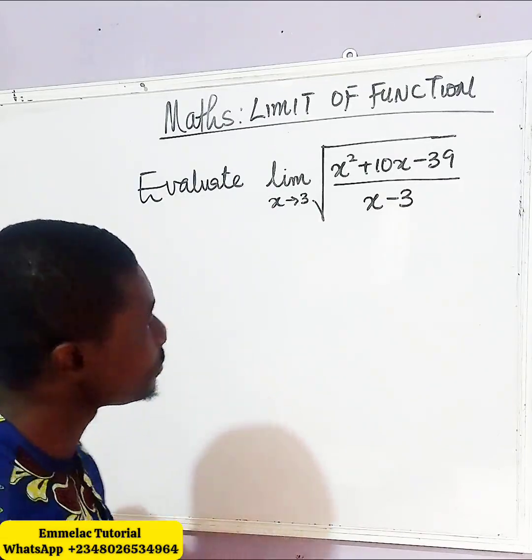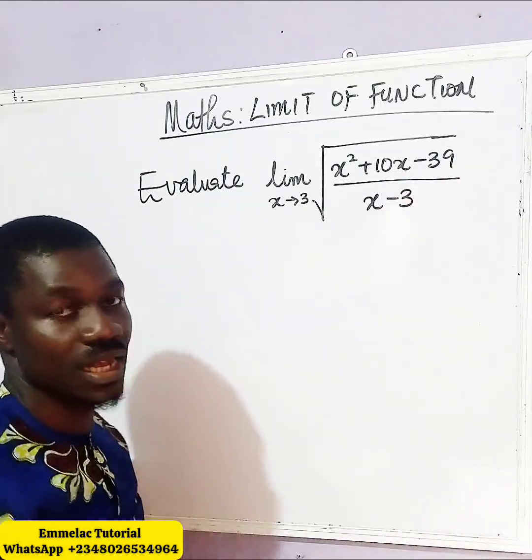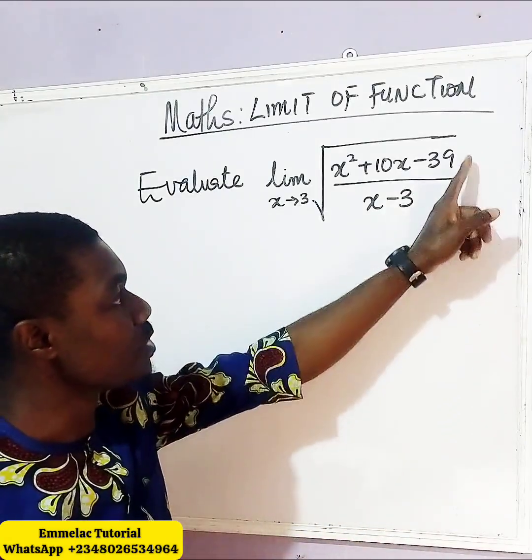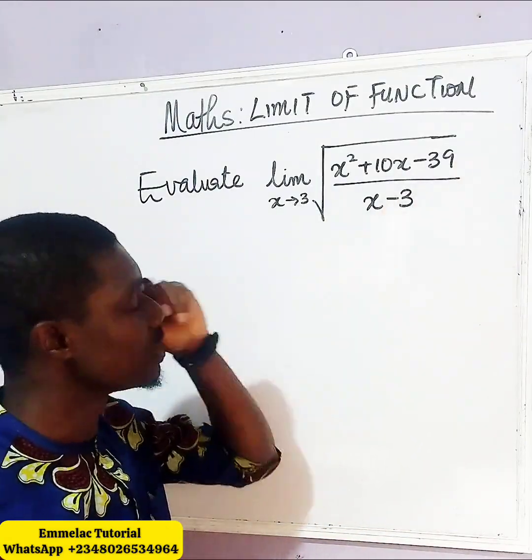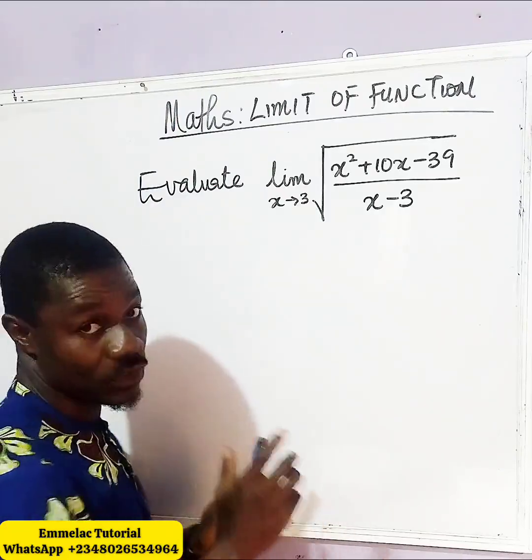How do we get started? Now, first of all, let us factorize the numerator inside the radical. Let us factorize it first.